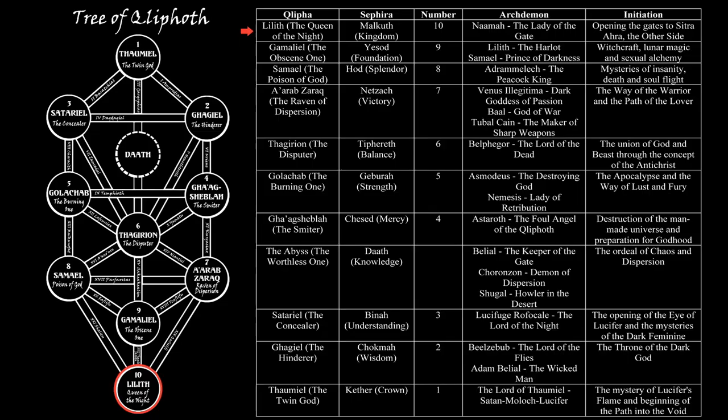The first initiation is that of Lilith, the Queen of the Night. This is not to be mistaken for Lilith as a goddess, because the ruling goddess of the Qliphah is not Lilith herself, but her sister Naamah, the Lady of the Gate. This Qliphah corresponds to Malkuth, Kingdom, and the initiatory experience is the opening of the gates to Sitra Ahra, the Other Side.